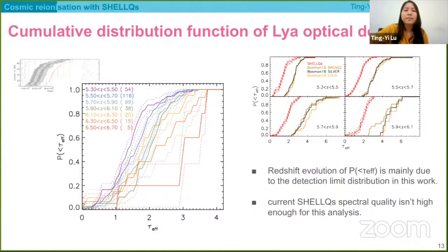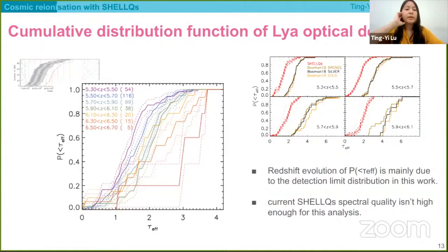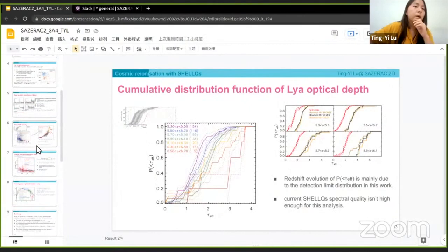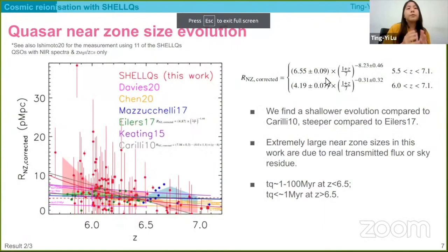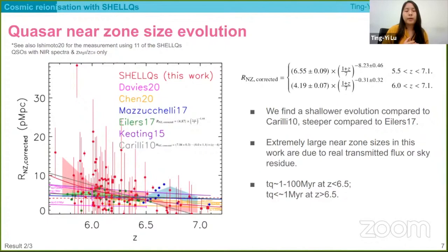Any other questions? There is a question about comparison with results by Ishimoto et al. Actually, she presented results last year. She used only near-infrared spectra, which have higher SNR, and only quasars with redshifts determined by other lines such as the beta lines. She did find some quasars with very small near zone size. So there are young quasars in the SHOLE sample, but we can't really tell from the current dataset.